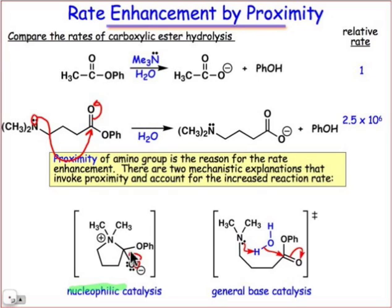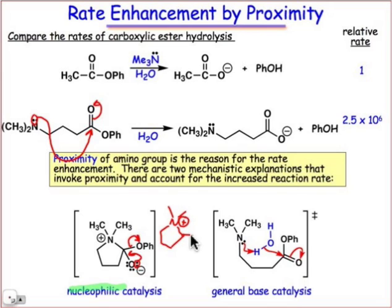That intermediate is going to go on and do a β-elimination, kick out the phenoxide group. That'll generate an intermediate that's a very good leaving group that will subsequently undergo hydrolysis. It's a good leaving group because it's an acyl ammonium — the positive charge makes this a very good leaving group, making that carbonyl susceptible to attack by water, and then the ammonium group will be expelled.